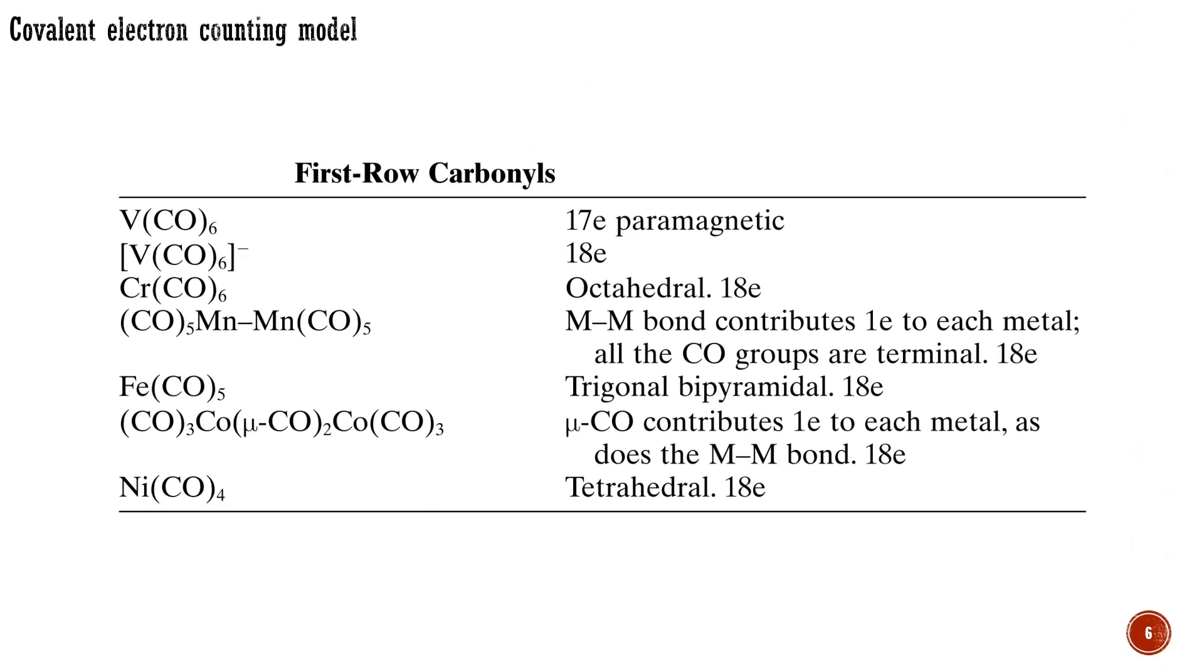This table shows how most first-row carbonyls follow the 18-electron rule. Each metal contributes the same number of electrons as its group number, and each carbon monoxide contributes two electrons from its lone pair. Backbonding makes no difference to the electron count for the metal. The free atom already had the pairs of d-electrons destined for backbonding. In the complex, it still has them, now delocalized over metal and ligands.